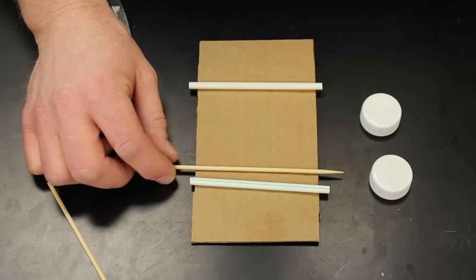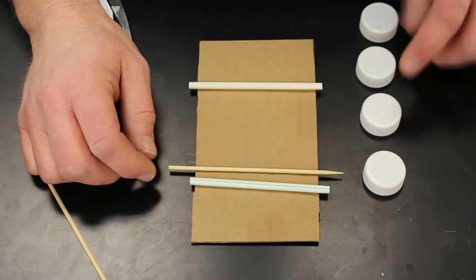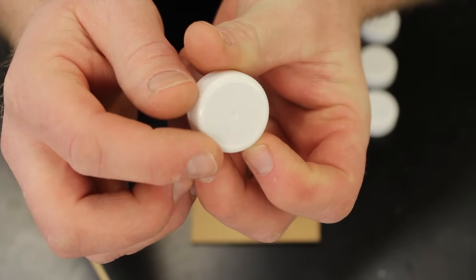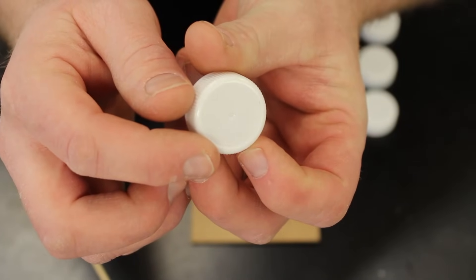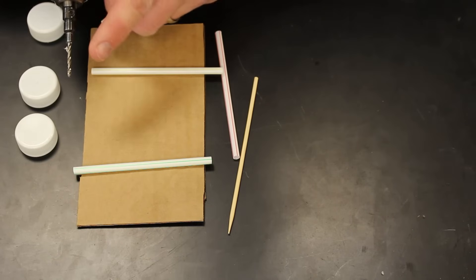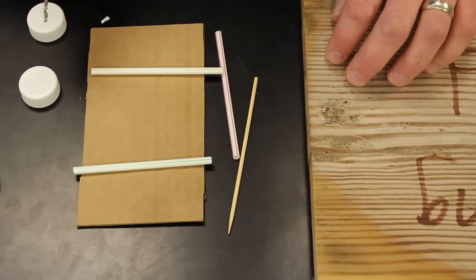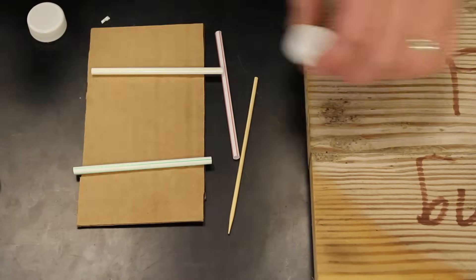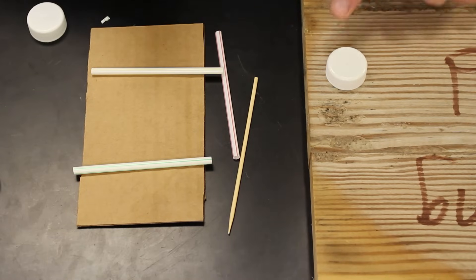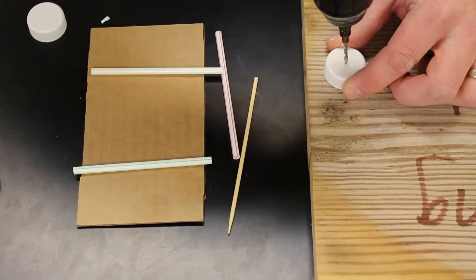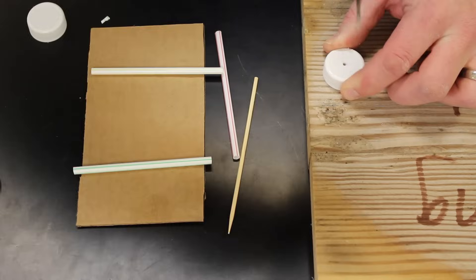For the caps, I need to drill a hole in the center. It helps if you have a cap that already has an indentation marking the center for you. To drill my holes, I'm going to use a 7/64-inch bit. I'm going to make sure I have something down on my work surface that I can drill into. Put it on that center mark of the cap and drill the hole.